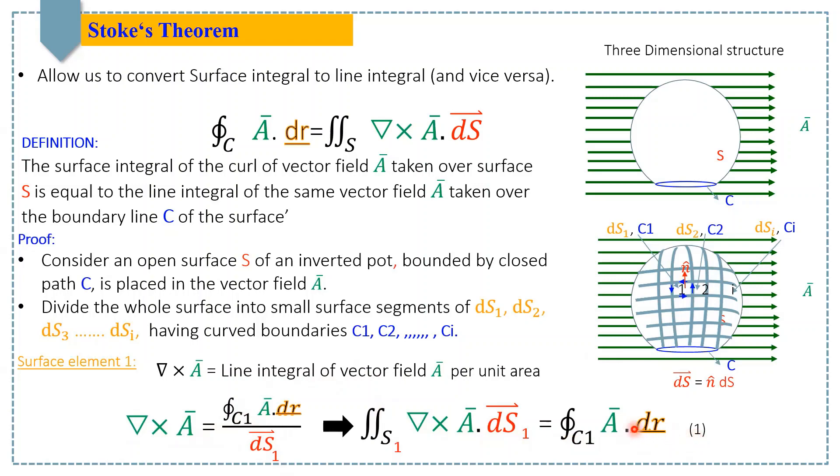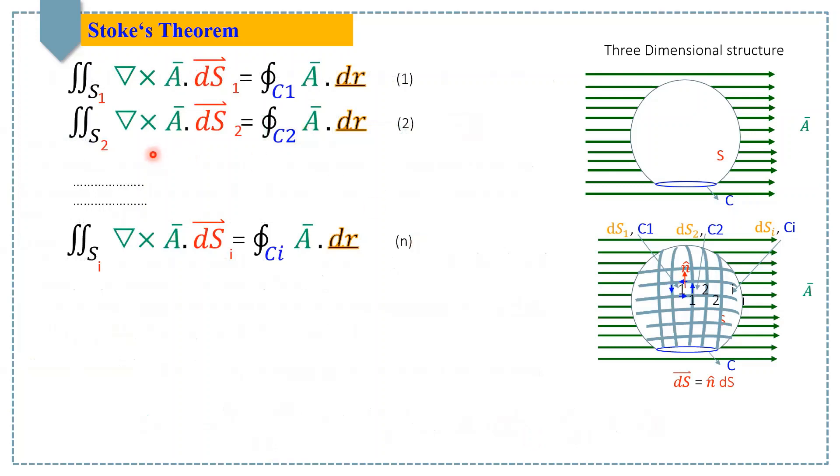This equation will be true for all elements. Hence, for the second element we can write surface integral S2 del cross A dot dS2 is equal to line integral C2 A dot dr.